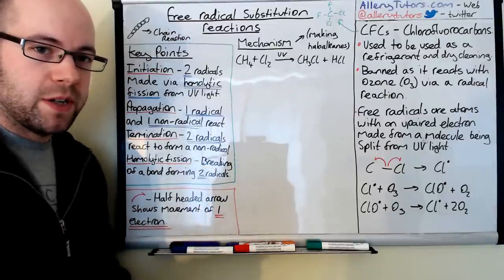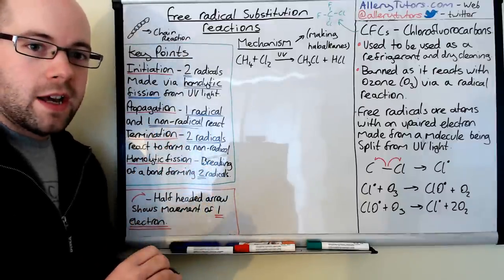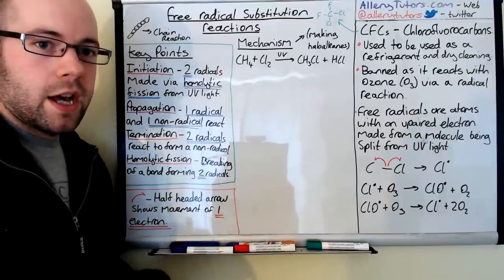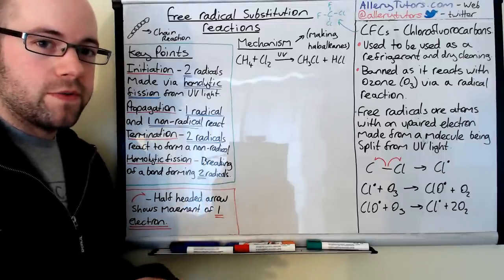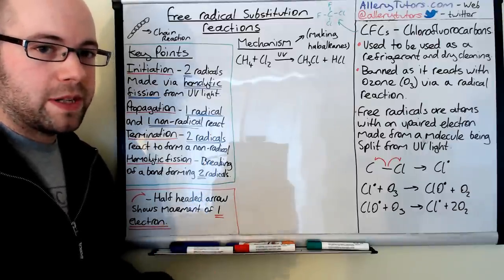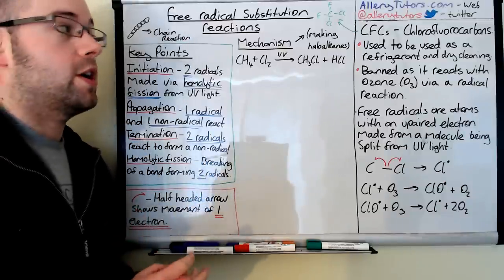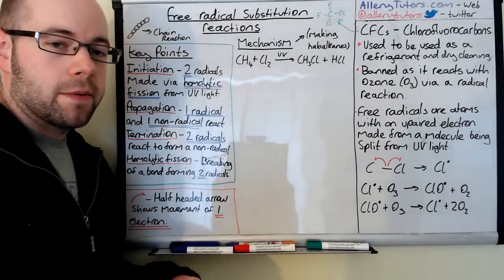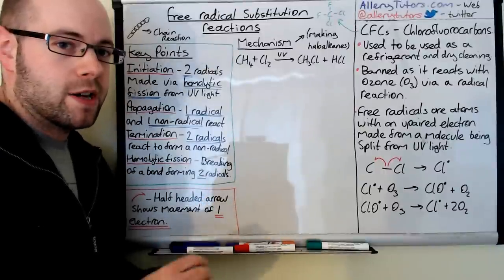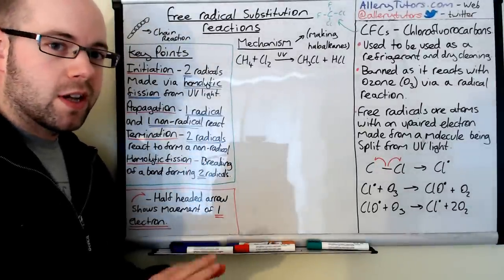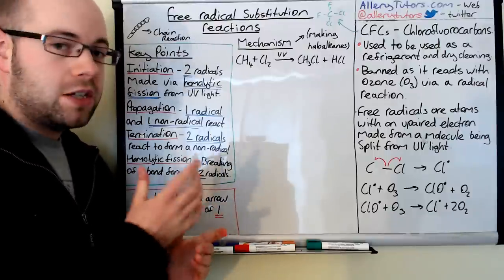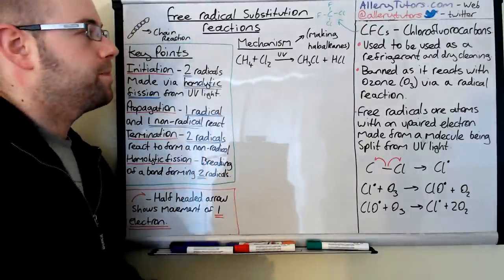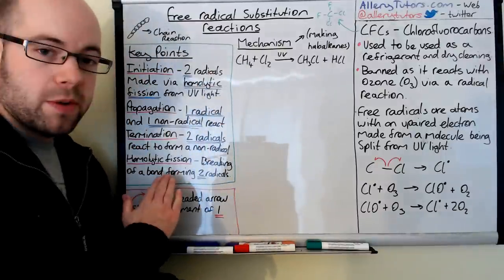Free radicals are a really reactive species — a lot more reactive than any positively charged atom. Because they're really reactive, they are good at making new products without a lot of energy other than the UV needed to get the reaction going. The use we're going to look at in particular is making a haloalkane. I'm going to use an example of making chloromethane from an alkane, which are normally pretty unreactive and stable molecules, reacted with chlorine gas. All we need to get this reaction going is UV light, but the product is not very pure, as I'll explain.